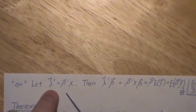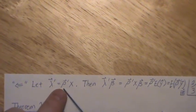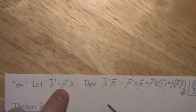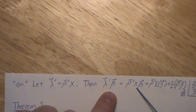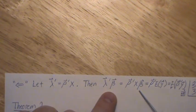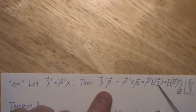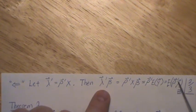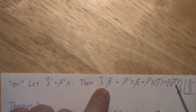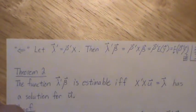Now let's go back the other way. Assume that lambda prime is part of the row space of x. Then we have lambda transpose beta; we replace lambda with rho transpose x, and x beta is the expected value of y, so that expectation can come back out and we get this. So there is an unbiased estimate of a linear combination of y's that equals this function, so it is estimable. We've proved it both ways.